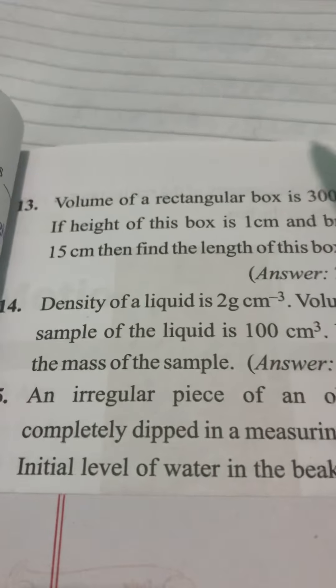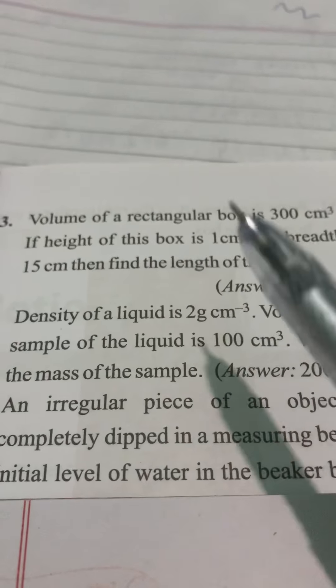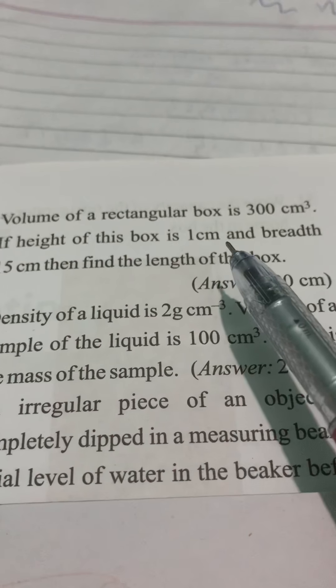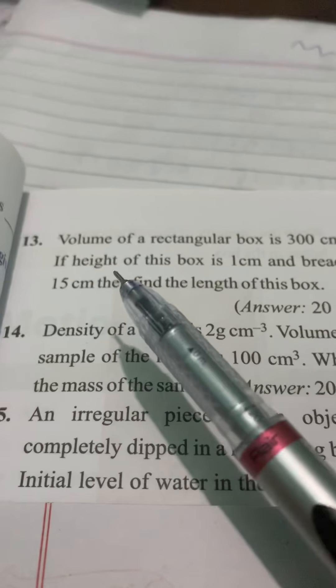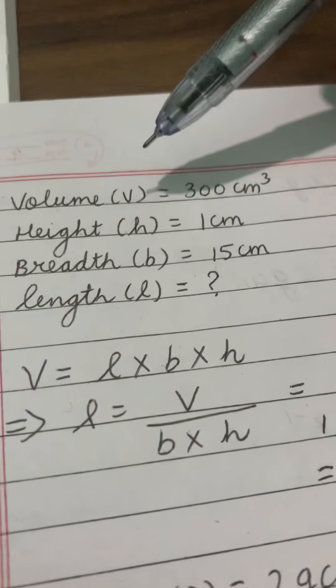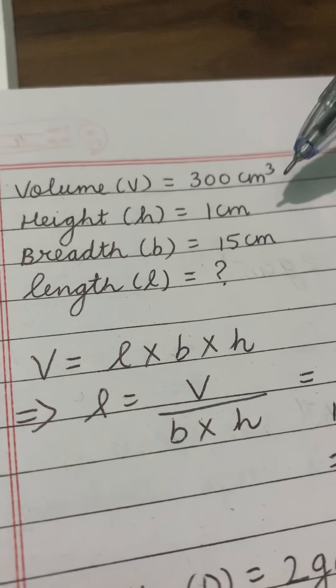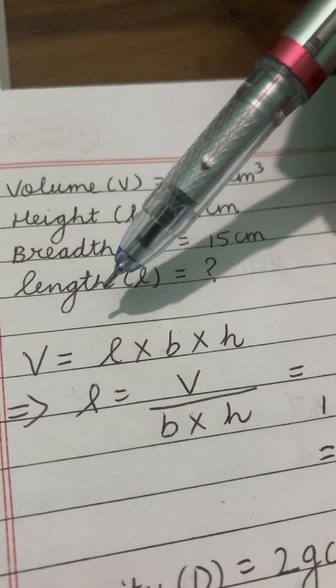Next 13th. Volume of a rectangular box is 300 cm cube. So here volume is already given to you. Height is given to you 1 cm and breadth is given to you 15 cm. You have to find the length of this box. Volume is given to you. Height is given to you. Breadth is given to you. We have to find the length.